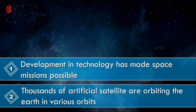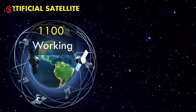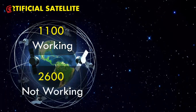A lot of developments are happening in space from time to time. The world as well as India has done many great things. We have around 1,100 working artificial satellites revolving around the earth, and there are around 2,600 satellites that are no longer working.